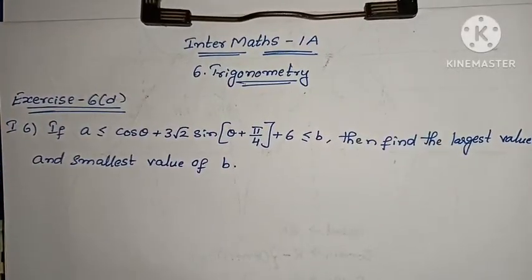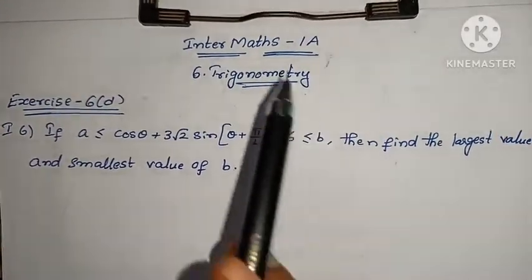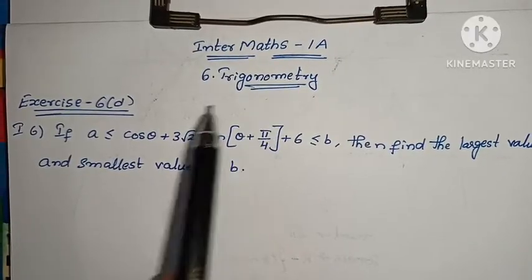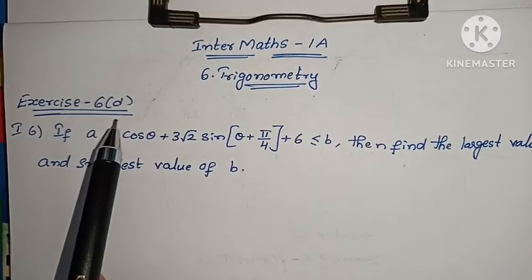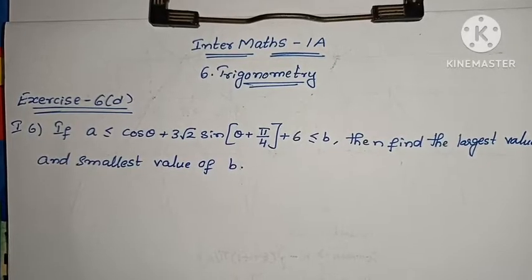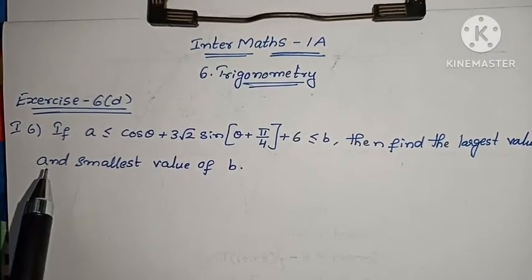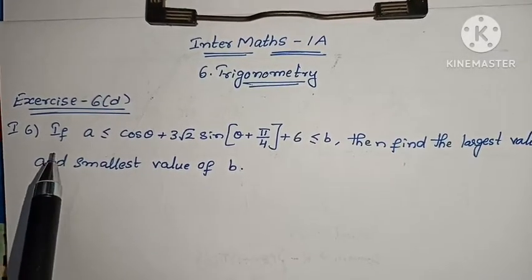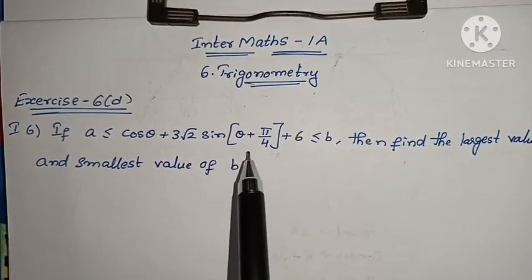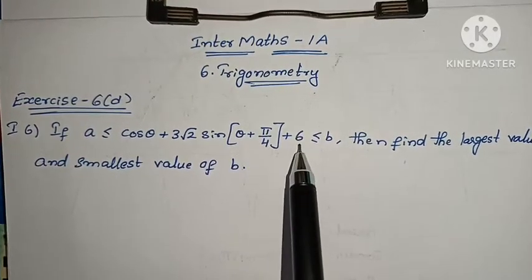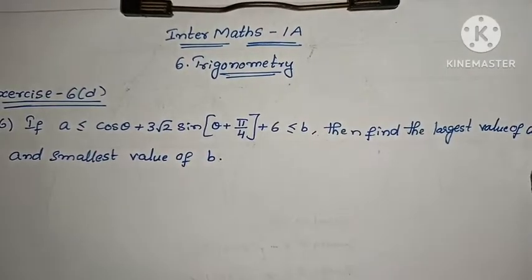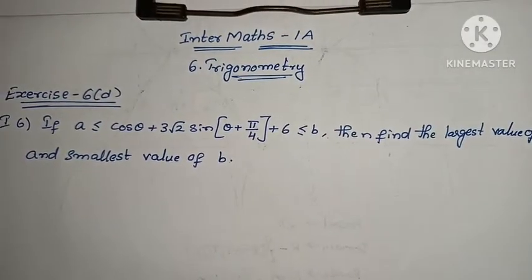Welcome to Padmika Maths. In the Maths chapter 6, trigonometric ratios up to transformations, we have completed the 5th problem. In this video, the 6th problem is next. The question: if A ≤ cos θ + 3√2 · sin(θ + π/4) + 6 ≤ B, then find the largest value of A and the smallest value of B.